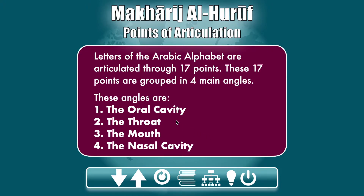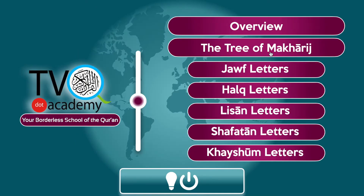These 17 points are grouped into four main angles: the first being the oral cavity, which we'll be covering today; the second being the throat; the third being the mouth; and the fourth being the nasal cavity. The mouth here is divided between the lips as well as the inner part of the mouth.